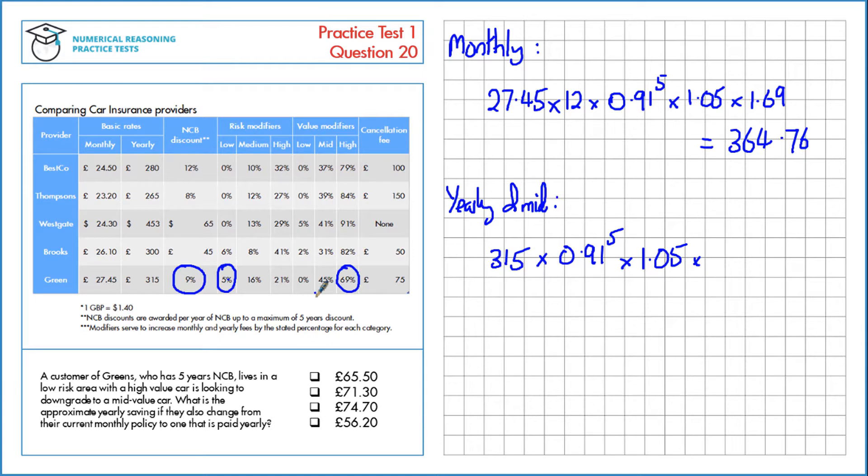However, they're changing to a mid value car so instead of an increase of 69% it's now going to be an increase of 45% which is 1.45. That means in total they pay £299.28 yearly.